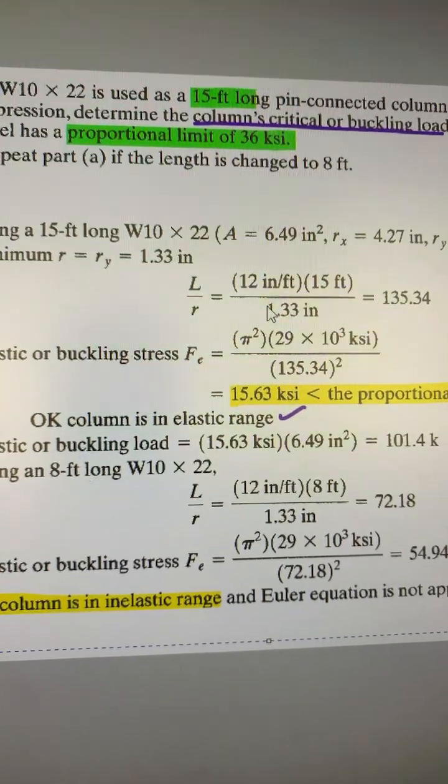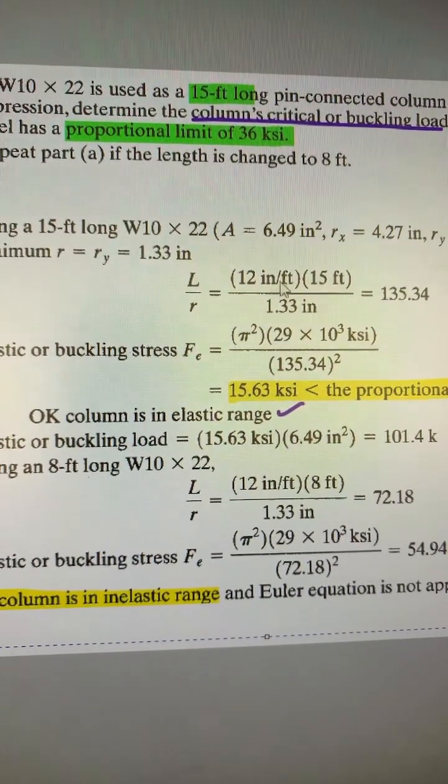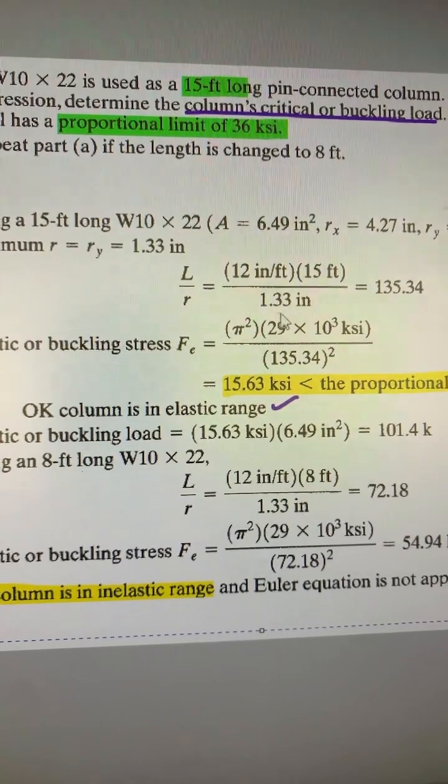So 15 feet long W10 by 22 means area rx ry minimum is ry. So L by r, if you see, this is 15 feet we are converting into inch.